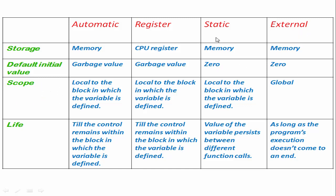The next property is scope. For automatic, register, and static storage class variables, it is local to the block in which the variable is defined. For external storage class variables, the scope is global. The next property is lifetime. For automatic and register storage class, lifetime is until the control remains within the block in which the variable is defined. For static storage class, the value of the variable persists between different function calls. And for external storage class, lifetime is as long as the program execution doesn't come to an end.